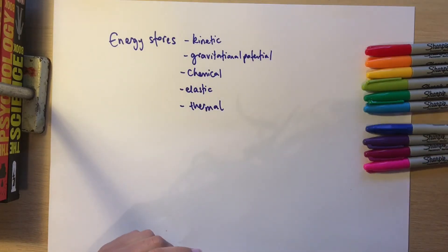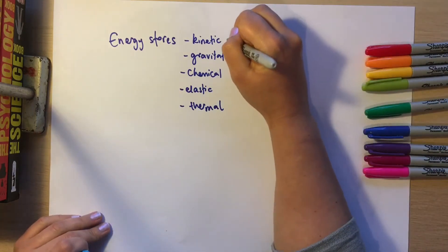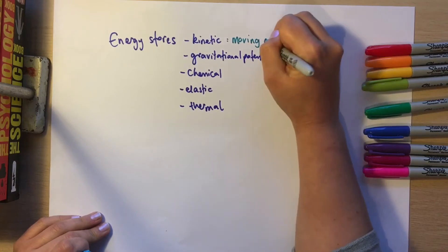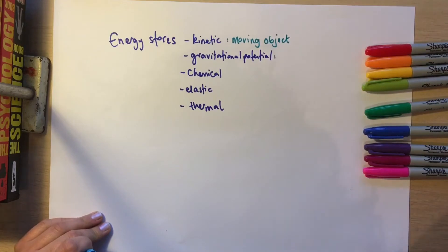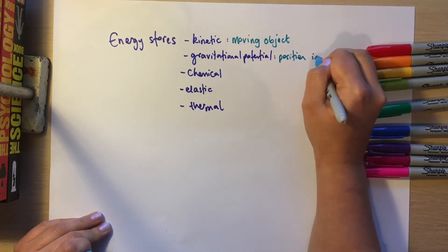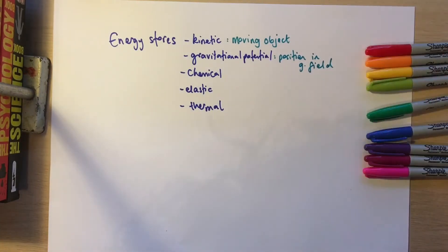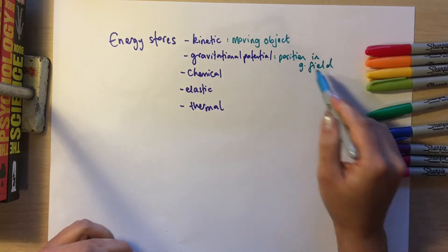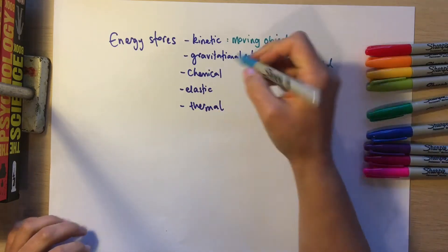You need to know what we mean by each of these things. With kinetic energy, we are talking about something that is moving — anything that is moving has some kinetic energy. Gravitational potential energy is about its position in a gravitational field, so its height is the main thing. If there's a change in position in the gravitational field, then that's a change in gravitational potential energy.